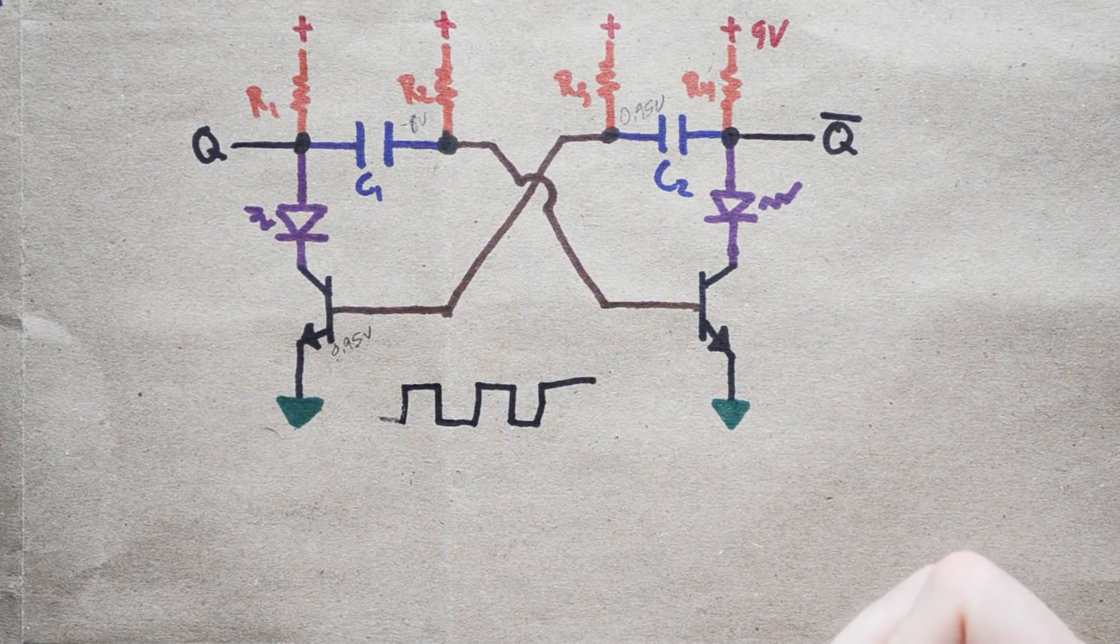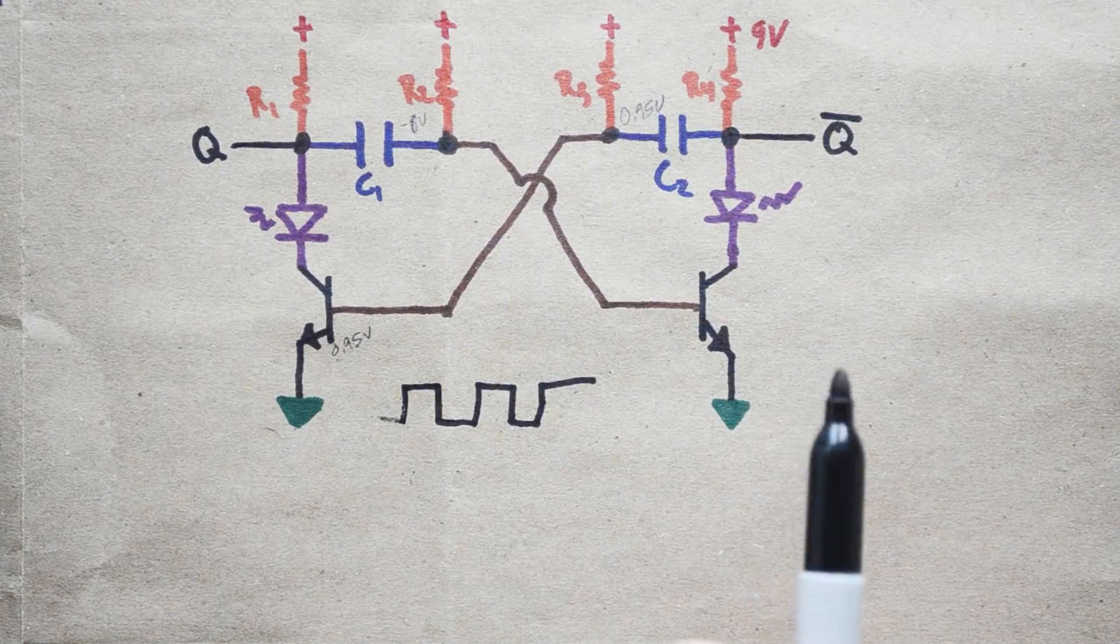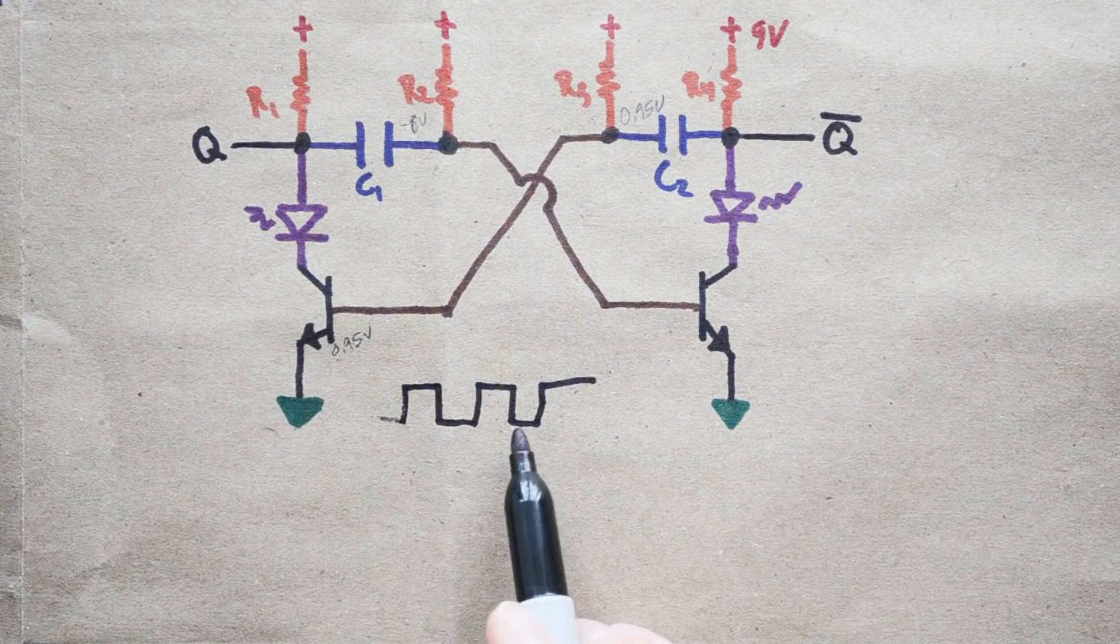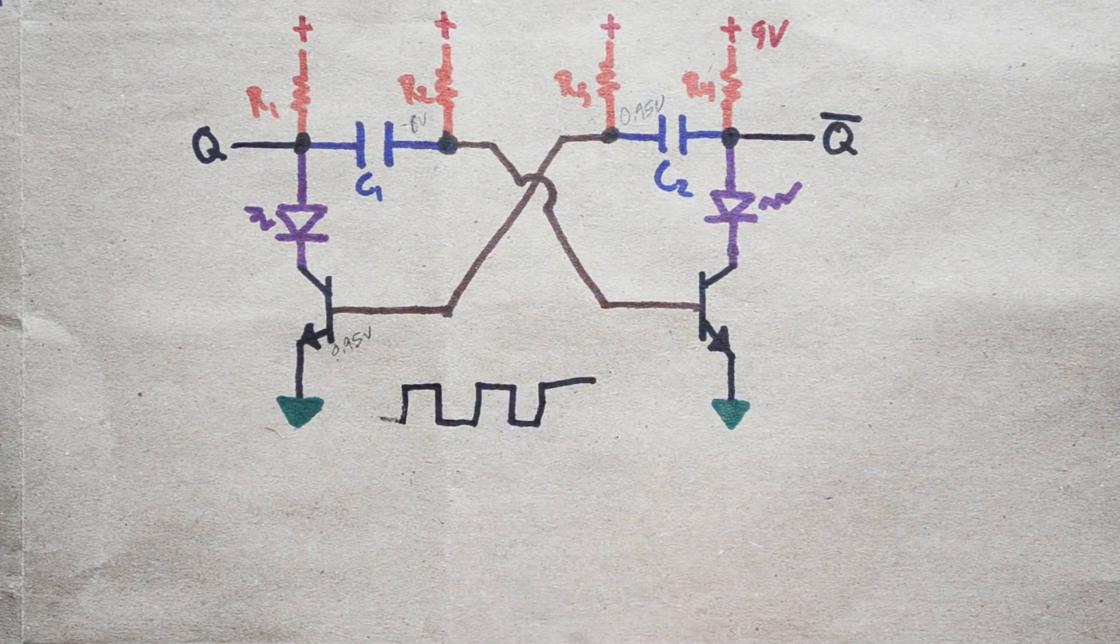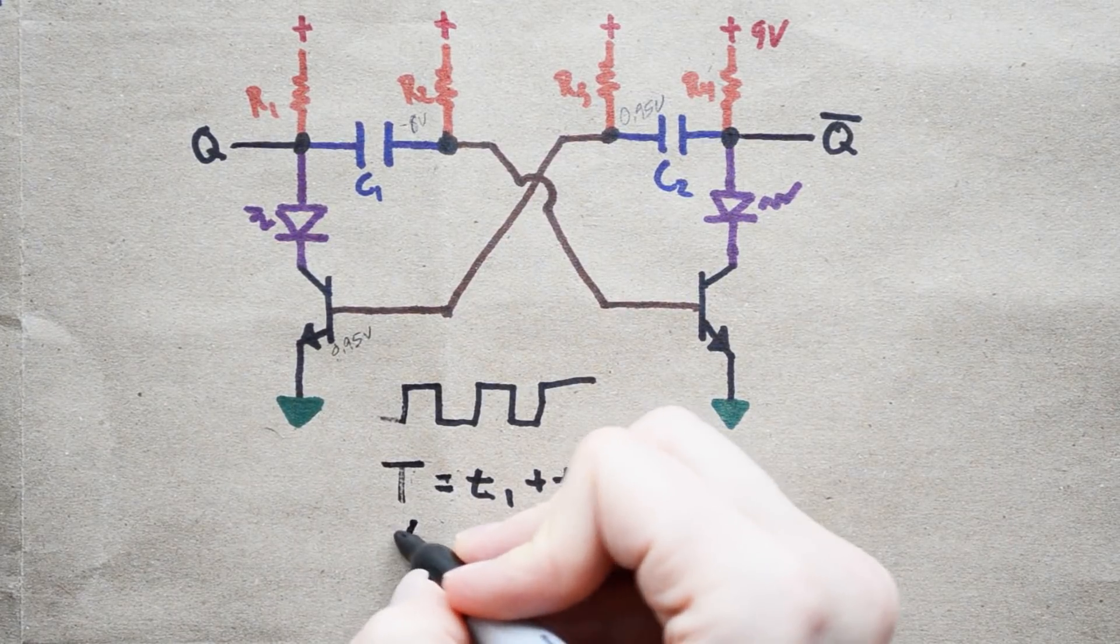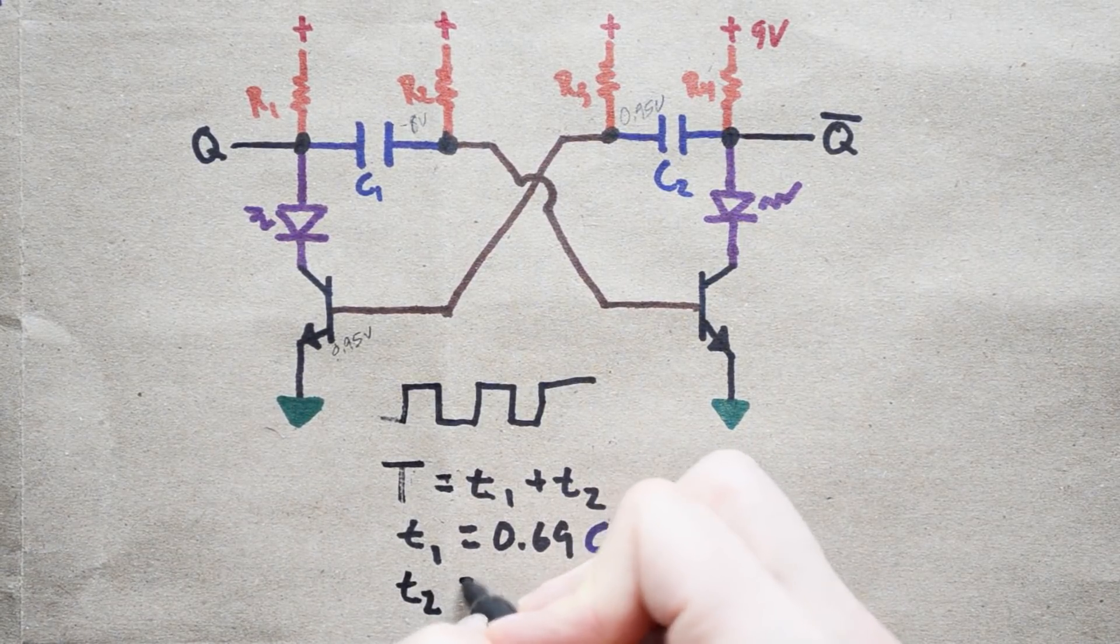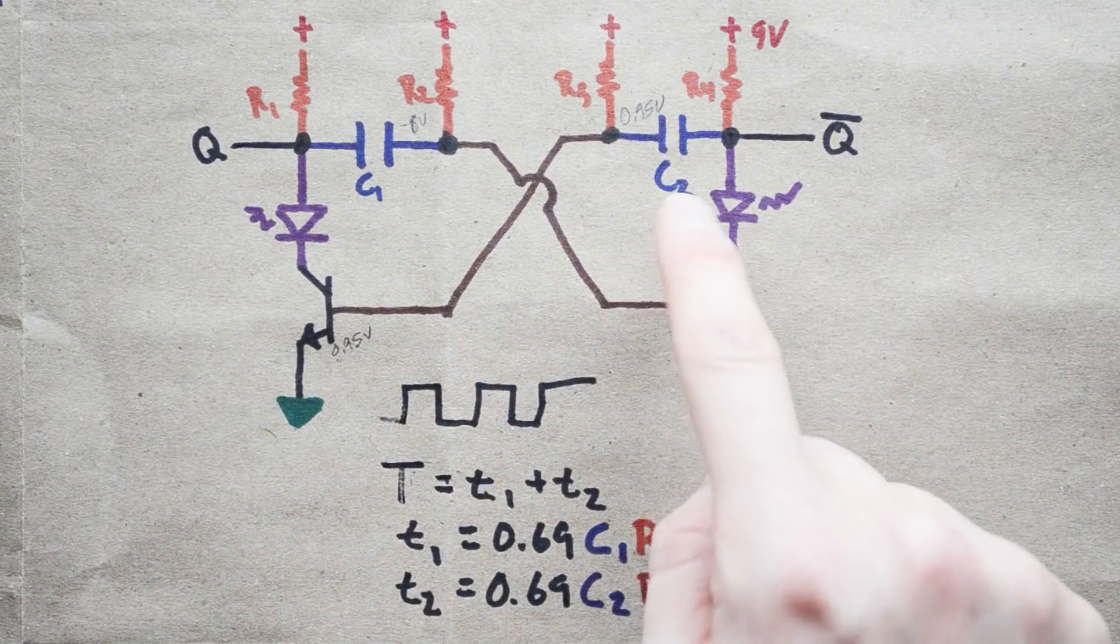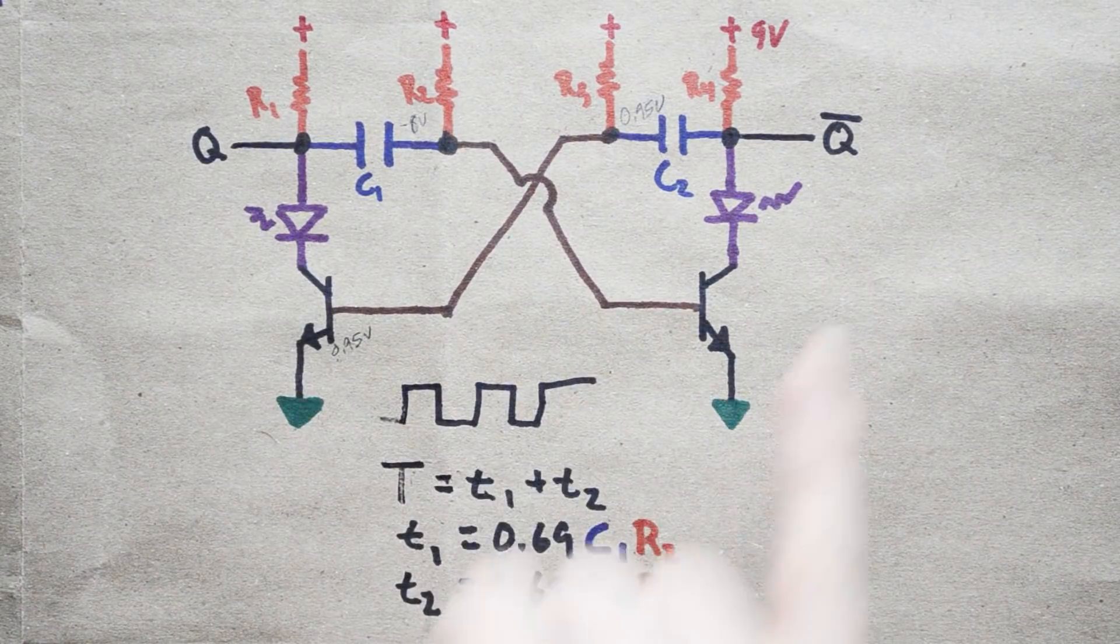Now, there is some math that's involved in this so that if you want to kind of guess what values of R2 or R3 or C1 or C2 that you want, you can mess around with them to determine how long something turns on or how long something turns off. The period as far as how long it takes from the rise of the output to the next rise of the output can be determined by this formula. So, you have a period equals T1 plus T2 where T1 is equal to 0.69 times C1 times R2 and T2 equals 0.69 times C2 times R3. So, by varying the values of C1, R2 and C2, R3, we can determine how long this waveform is on and off whether you're using Q0 or Q.